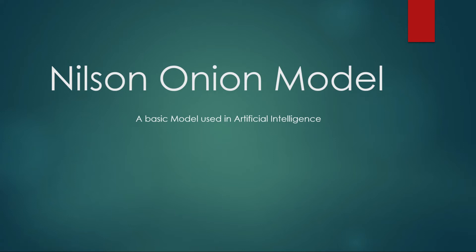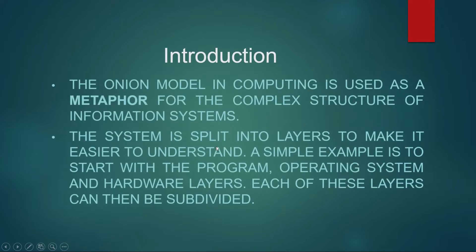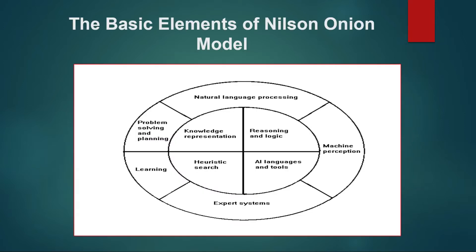Hello students, today we are going to discuss the basic model used in artificial intelligence: the Nielsen Onion Model. This model is proposed by a researcher called Nielsen and in computing it is used as a metaphor for the complex structure of information systems. The model is split into layers or rings to make it easier to understand — an inner ring and an outer ring, just like an onion.